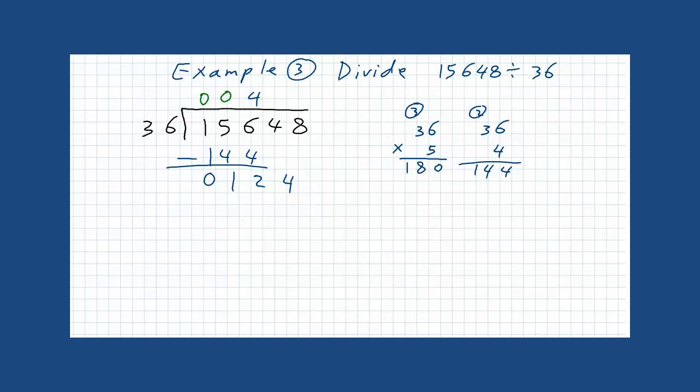124 divided by 36. Let us hide 4. We have 12. Let us hide 6. We have 3. 12 divided by 3. It is 4. It is larger than 124. So, let us try multiplying by 3. 3 times 6 is 18. 3 times 3 is 9 plus 1, 108. This is more appropriate for us. So, we will choose 3. And the answer after multiplying is 108.